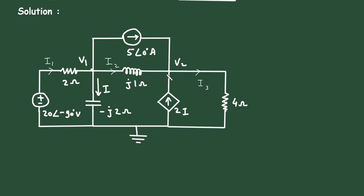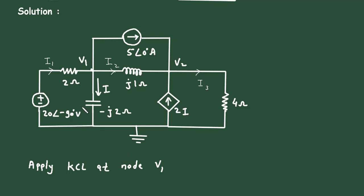First, let us apply KCL at node V1. According to Kirchhoff's current law, the summation of all the currents entering a node is equal to the summation of all the currents leaving the node.